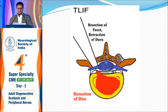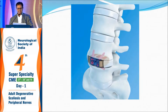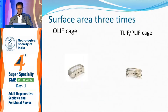TLIF can be done as an open approach or through a tubular technique, which Dr. Sudhir will be speaking about. I will be speaking about the anterior lumbar fusion. For anterior lumbar fusion, one can do a transperitoneal or retroperitoneal approach in a supine position, normally done for L5-S1. The size of the OLIF cage is three times that of the TLIF cage.